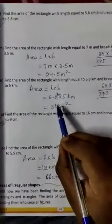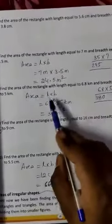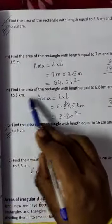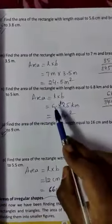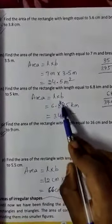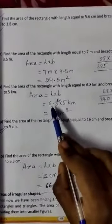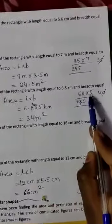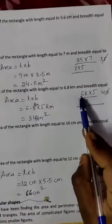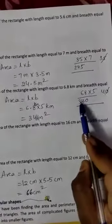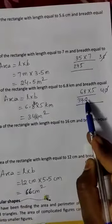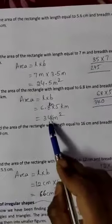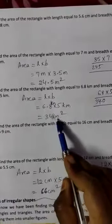Next problem N: length is 6.8 kilometers, breadth is 5 kilometers. So, 6.8 km × 5 km. Remove the point and do 68 × 5: 5 eights are 40, carry 4; 5 sixes are 30, plus 4 is 34. So the answer is 34 kilometer square.